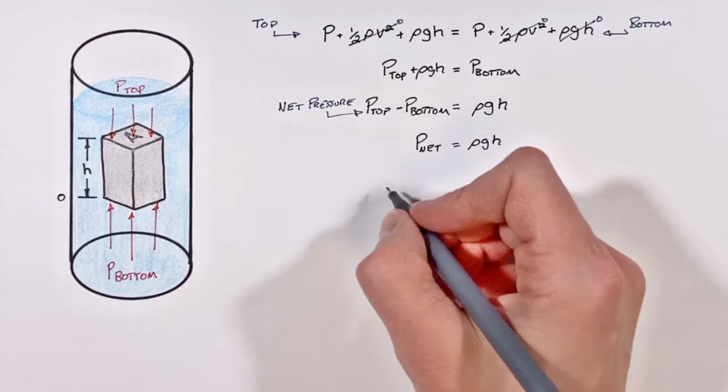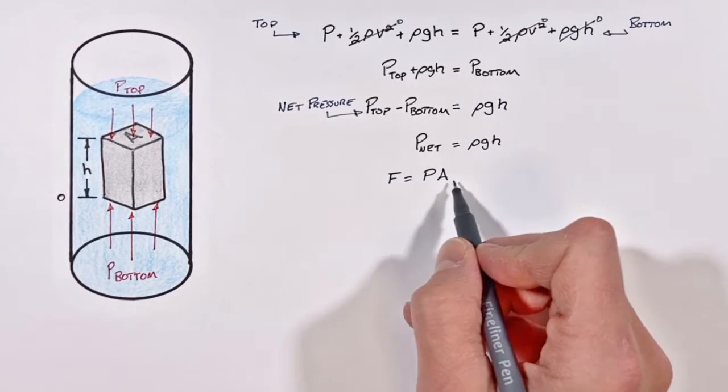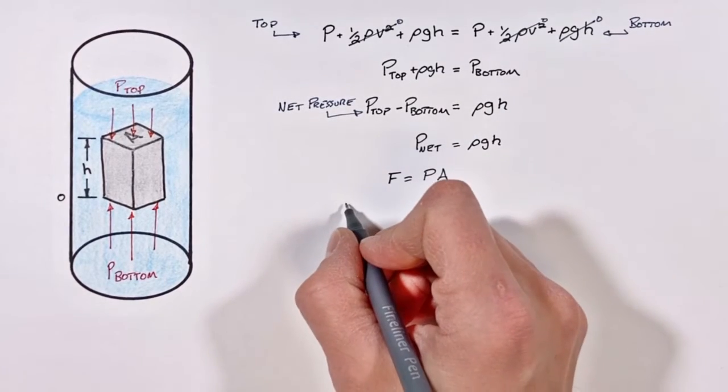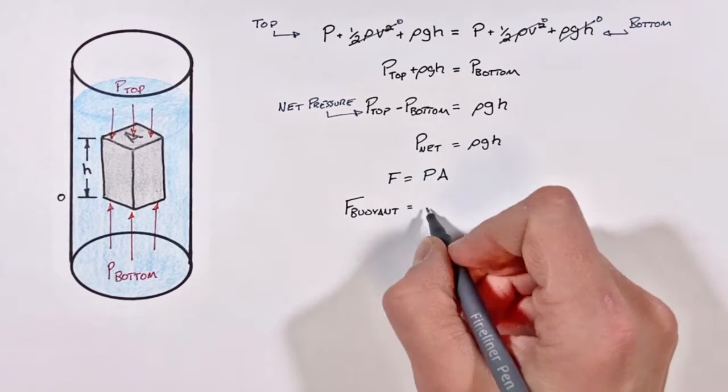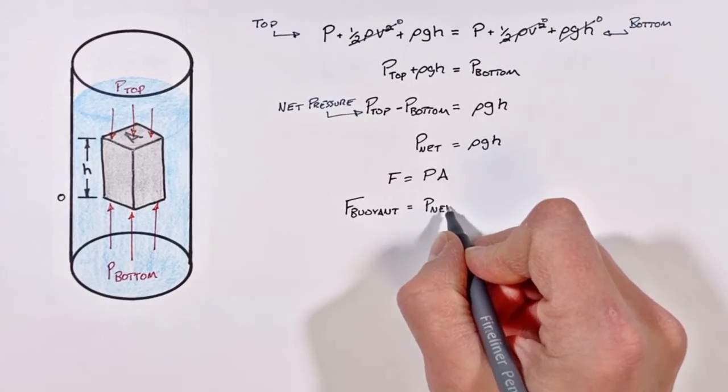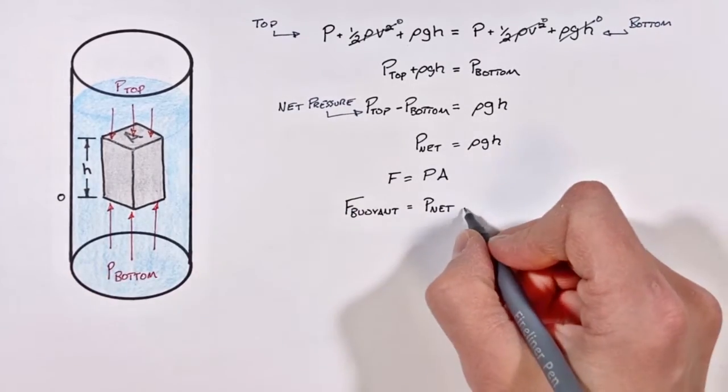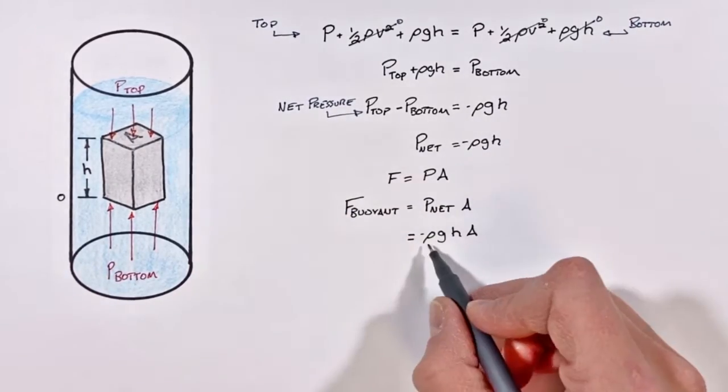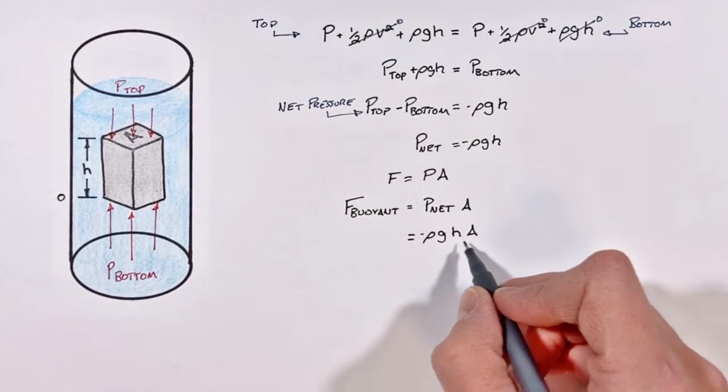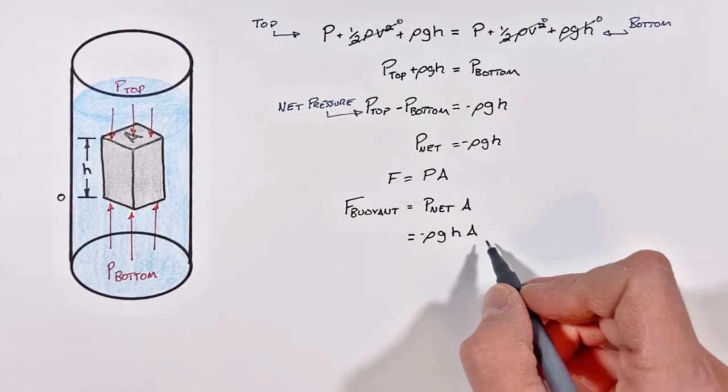Now force is given by pressure multiplied by area, so our buoyant force is going to be the net pressure multiplied by the area of this block. Now it looks like we have our net pressure multiplied by area, but I want to look at this in a slightly different way. Take a look at what's going on right here.